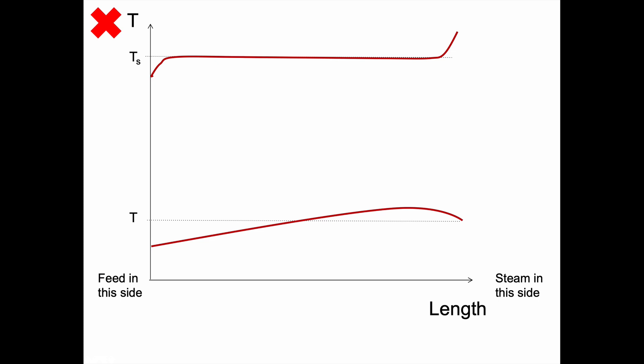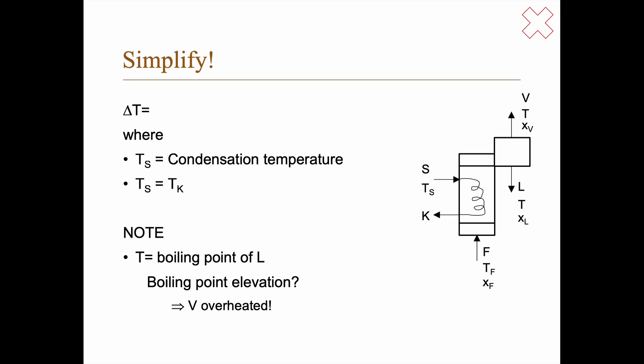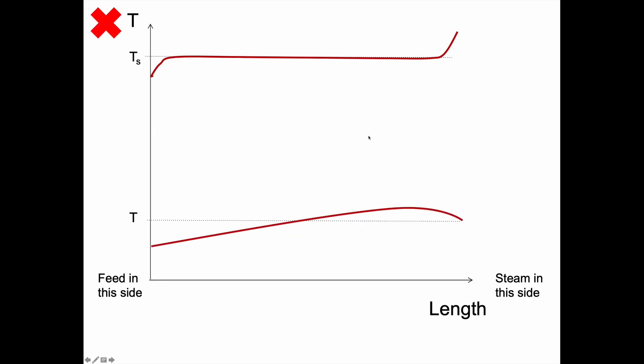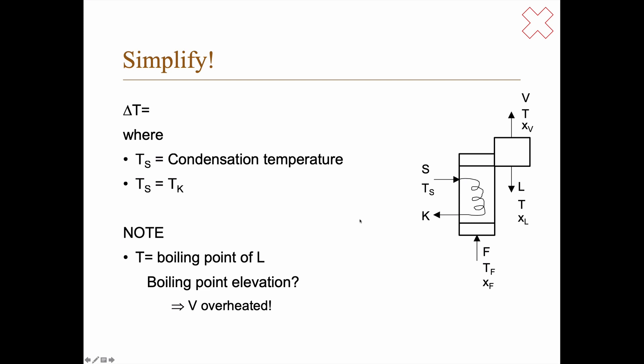We will assume in our course that we can say that the pressure drop is negligible, but anyway this is what happens in reality. So let's try to simplify this to make it easier to work with. We will simplify by saying that the ΔT in the heat exchanger is simply the condensation temperature of the steam minus the boiling point of the liquid leaving the system. So that's a bit different than this, right? We're essentially comparing this Ts here with this T down here and saying that that's the same throughout the heat exchanger.